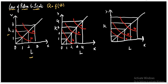The law of returns to scale has three parts. The first one is constant returns to scale.